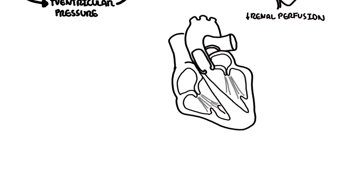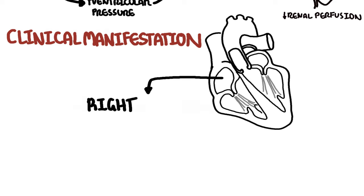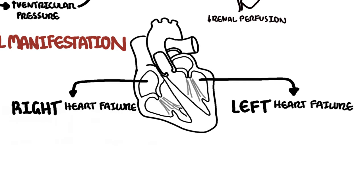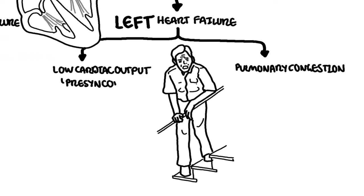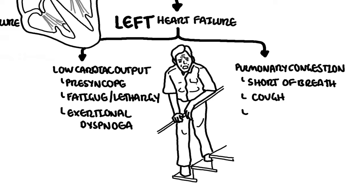This brings us to the clinical manifestations of heart failure, which are easily classified into right-sided and left-sided heart failure symptoms. Left heart failure causes low cardiac output and can lead to pulmonary congestion. Low cardiac output symptoms and signs include pre-syncope, fatigue and lethargy, exertional dyspnea with orthopnea, paroxysmal nocturnal dyspnea. Pulmonary congestion or edema causes shortness of breath, a chronic non-productive cough, coarse crackles at the base, and hypoxia.